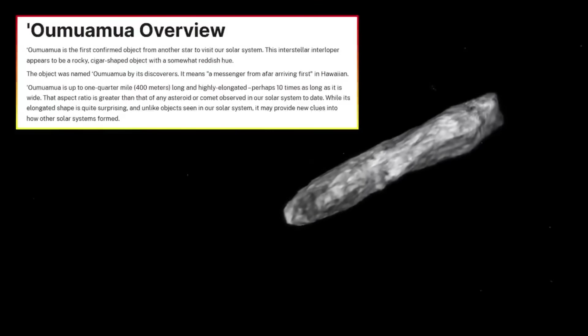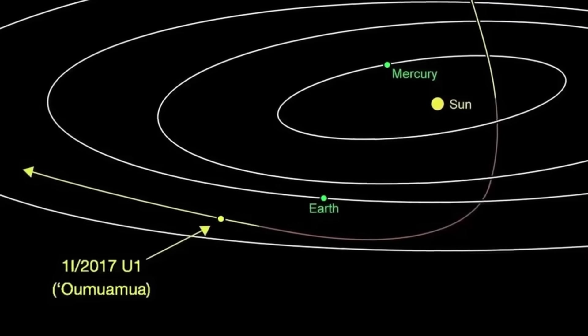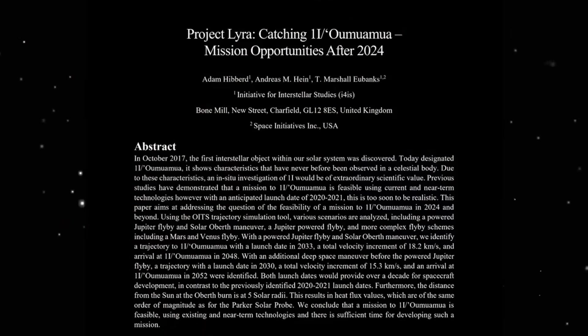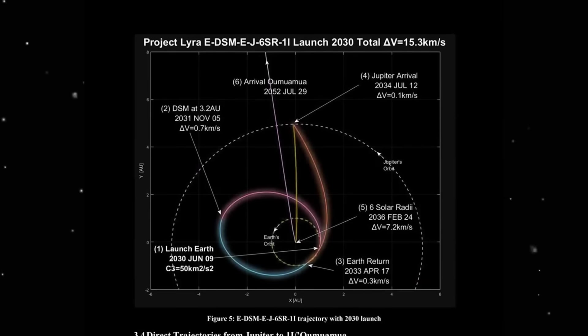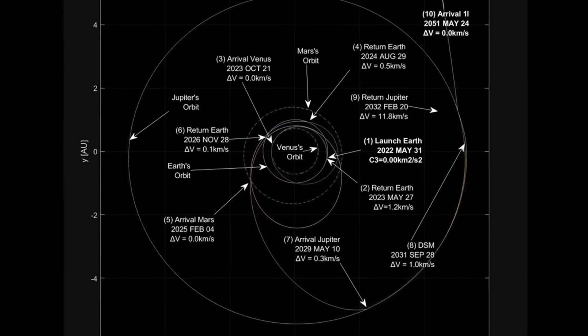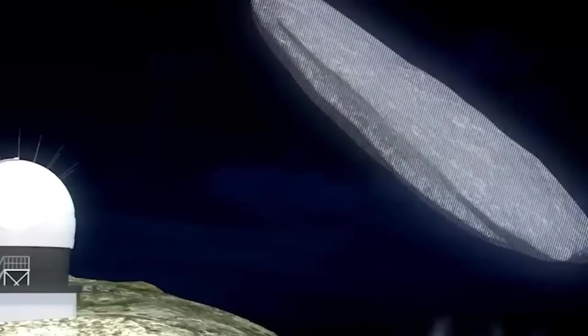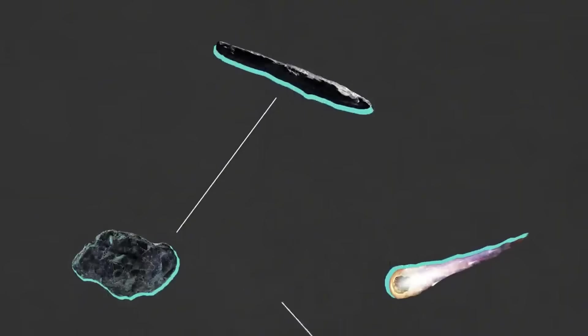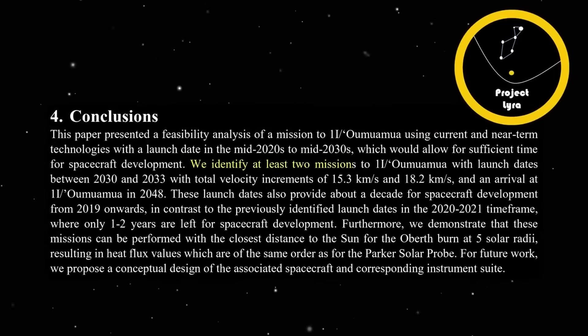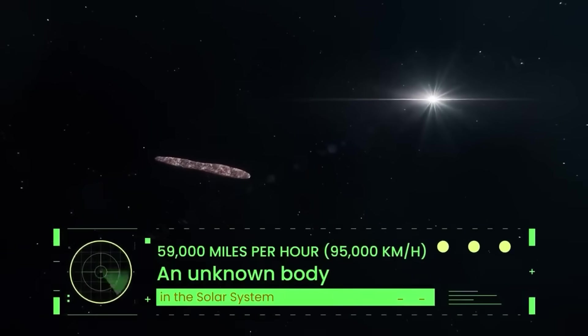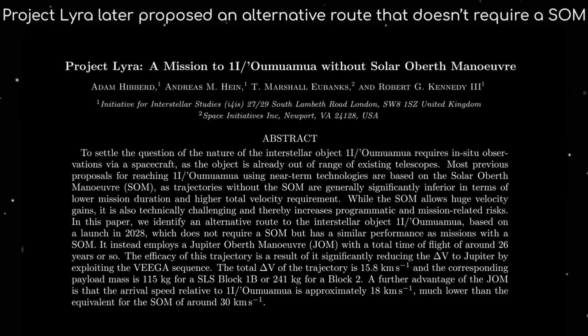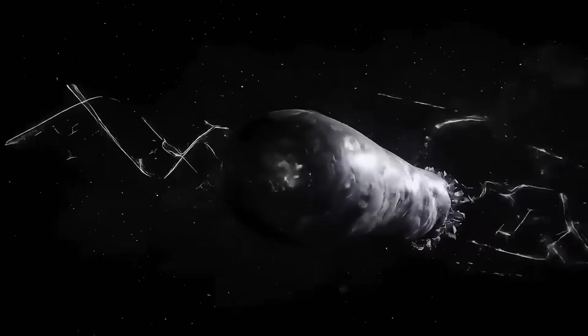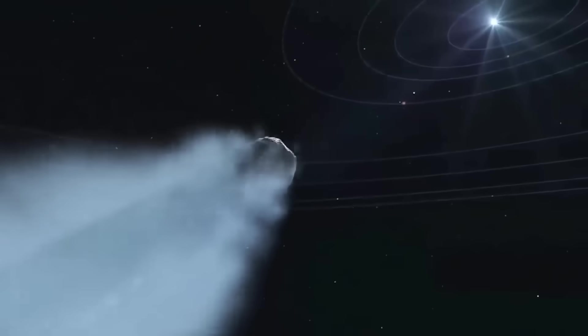Most puzzling was the complete absence of any visible coma or tail, despite exhibiting a slight acceleration that couldn't be explained by gravity alone. Normal comets get pushed by vaporizing ice when warmed by the sun, but Oumuamua showed no visible outgassing whatsoever. Science fiction fans immediately drew parallels to Arthur C. Clarke's Rendezvous with Rama, which features a cylindrical alien starship entering our solar system. Some astronomers even half-jokingly nicknamed the object Rama on social media. All these details set the stage for why Kaku's new data and the sudden arrival of 3i/ATLAS have reignited the mystery that's been simmering since 2017.